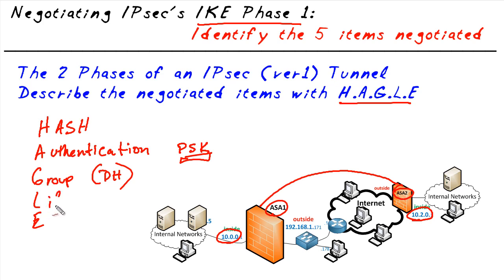The L is for lifetime — how long should this IKE Phase 1 tunnel stay up? Should it be a day? Should it be an hour? The shorter the lifetime the more secure it's considered, because if it gets torn down after an hour it has to be rebuilt with new keying material from new Diffie-Hellman. The default on a Cisco router for a site-to-site tunnel is one day for the IKE Phase 1 tunnel.